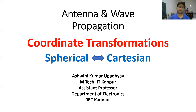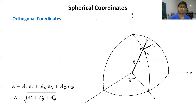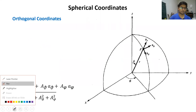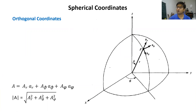Now we will talk about spherical coordinates and how we can transform between spherical and Cartesian coordinates. All three coordinate systems we are studying are orthogonal coordinate systems, meaning the three coordinates will be orthogonal to each other. We will see how in spherical coordinates the three coordinates are orthogonal.